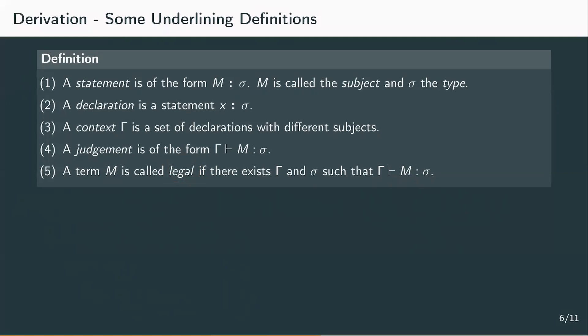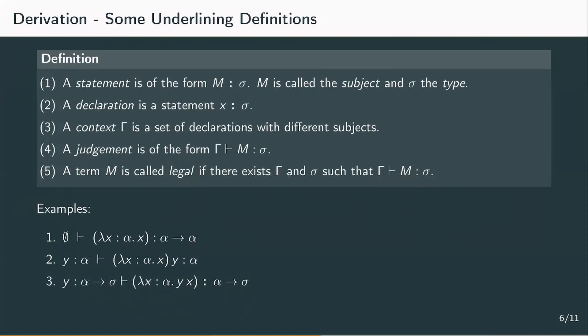In our earlier examples, we already constructed a few judgements. We stated that the identity function over an input of type alpha has type alpha to alpha, and since we don't have any free variables the context is empty — this is a legal term. The other two examples were more complex. First, we applied a variable y to the identity function, requiring it to be of type alpha, so y of type alpha has to be in the context. In the last example, we concluded that lambda x of type alpha dot y applied to x could have type alpha to sigma, but only if y is of type alpha to sigma — so we need to assume a type for y and put it in the context. If we chose the context to be empty, this judgement wouldn't be derivable.